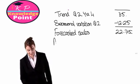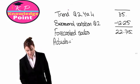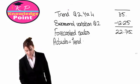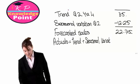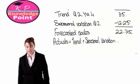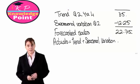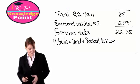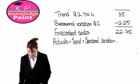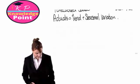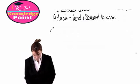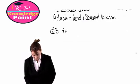Remember, using the additive model, our actuals are equal to the trend plus the seasonal variation. And that completes our forecast for Q2 year four. Let's do it again to make sure we're all happy. We were also asked to forecast the sales for Q3 of year five.